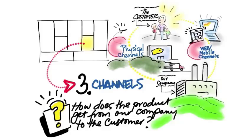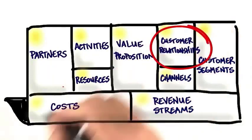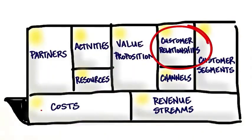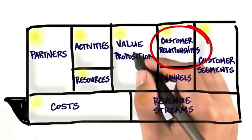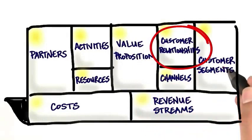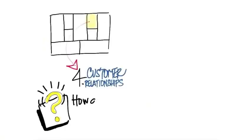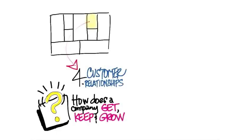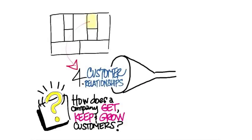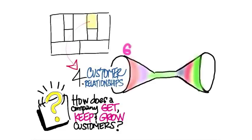Given today, almost every physical channel also has a web presence. The key question is: what is the relationship of how your product gets from your company to the customers? Customer relationships is the fourth piece, and it has an interesting interaction with the other pieces. It basically asks: how do I get customers, how do I keep them, and how do I grow them?